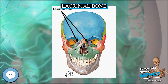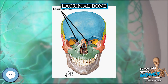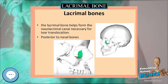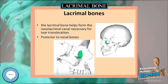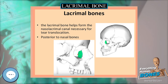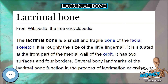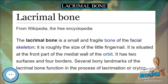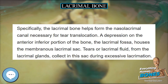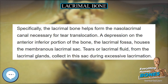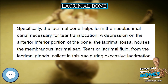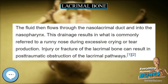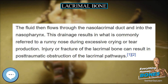In many dinosaurs, the lacrimal bone comes into contact with the nasal bone, the jugal bone, the prefrontal bone, and the maxillary and premaxillary bones. The boundaries where some of these bones meet with the others are called sutures. Rarely, the lacrimal bones fused with the nasal bones to form a pair of nasolacrimal crests, which are present in dinosaurs such as Dilophosaurus, Megapnosaurus, and Sinosaurus.